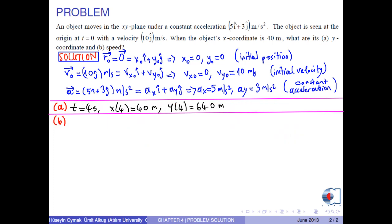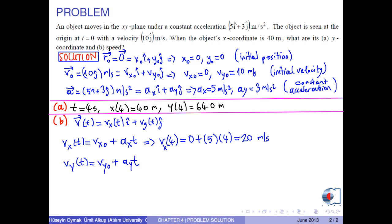In part B, to find the speed of the object at t equals 4 seconds, let us write the velocity vector in terms of its components. We can find the x-component of this velocity vector by this formula. At t equals 4 seconds, we have 20 meters per second. And the y-component of the velocity vector at t equals 4 seconds is found as 22 meters per second.